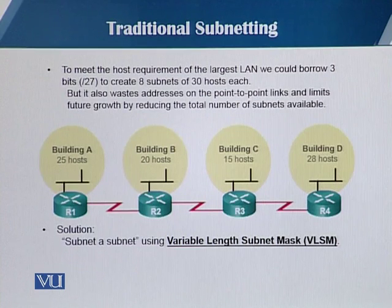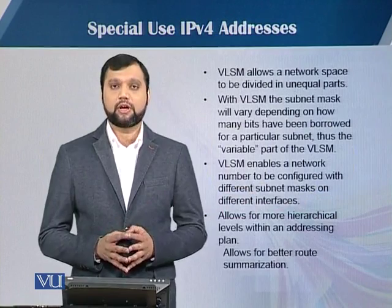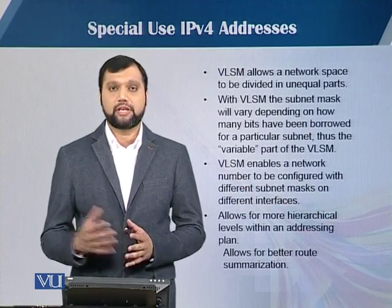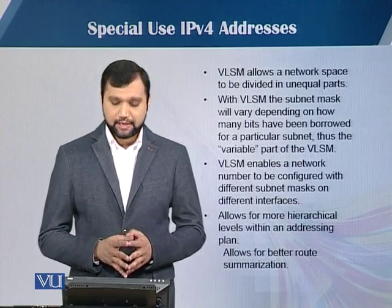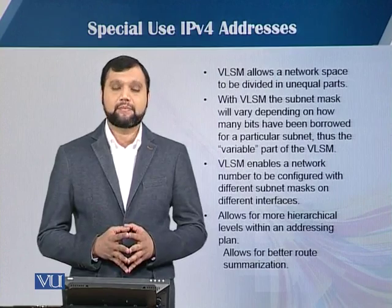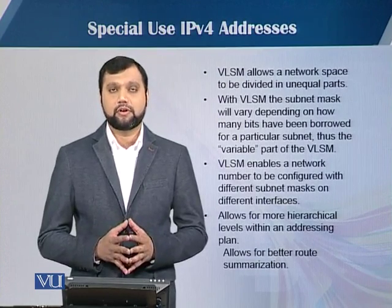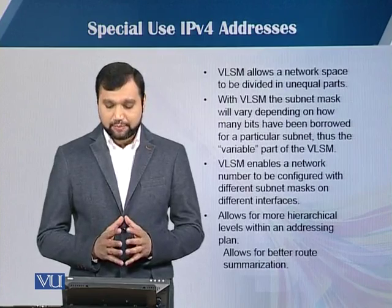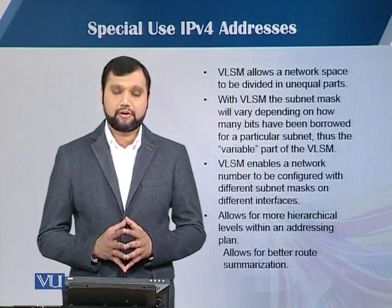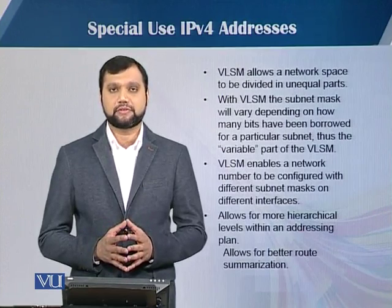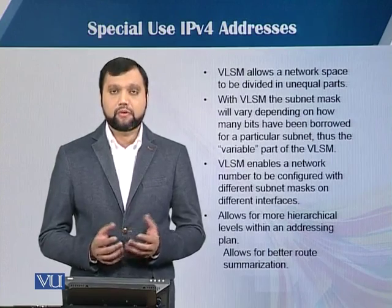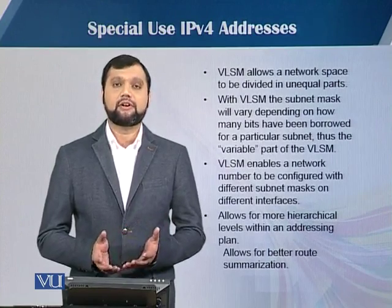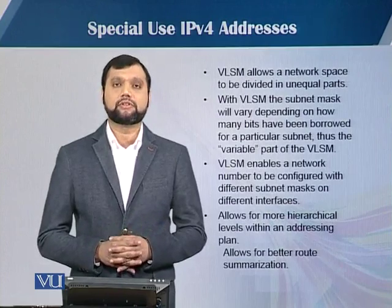We are going to subnet a subnet using Variable Length Subnet Mask — VLSM. VLSM allows a network space to be divided into unequal parts, so you can have variable-size subnet masks and subnet addresses. The subnet mask will vary depending upon how many bits have been borrowed from the host part for a particular subnet. VLSM also enables a network number to be configured with different subnet masks on different interfaces and allows for more hierarchical levels within an addressing plan, enabling better route summarization.